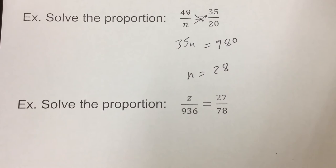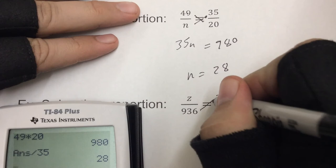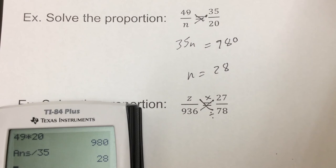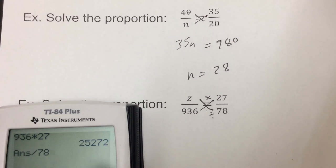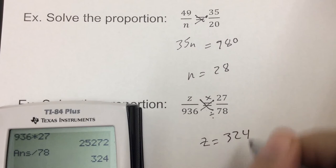So, next problem here. Again, if I just simply times this cross and divide by this cross, you're going to get the same thing. So, 936 times 27, and then divide by the 78. So, 936 times the 27, the two numbers that are crossing each other multiply, divide by what's across from the Z. So, divide by 78. And so, Z would equal 324.